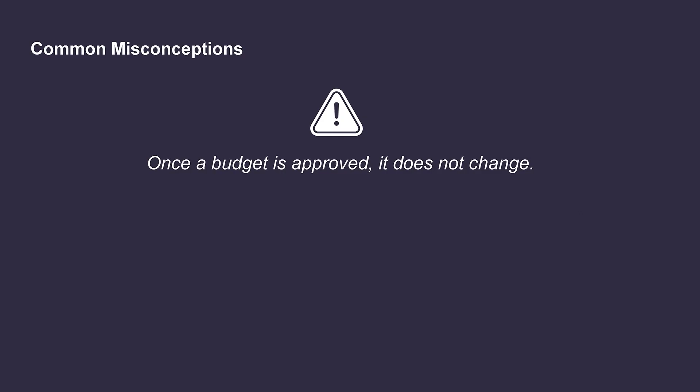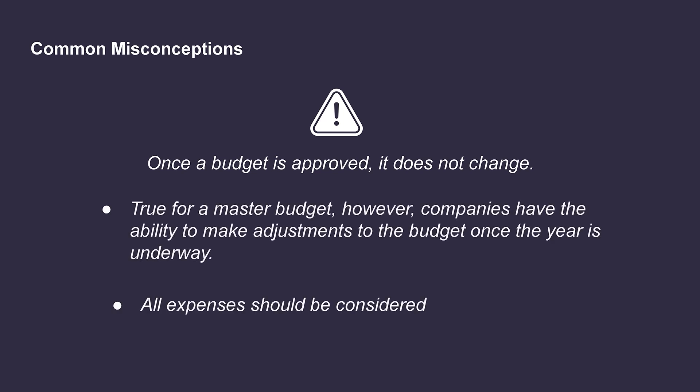Now, it's a common misconception that once the budget is approved, it's set in stone and doesn't change. While this is true of the original master budget, which is also sometimes called a static budget, companies have the ability to make adjustments once the year is underway. These adjustments are typically made to account for changes that have taken place in the business or economy following the completion of the budget. Regardless of whether a static or flexible budget is used, since operating budgets include so many inputs, it's a common mistake for certain costs to be missed during the preparation process. This can result in significant errors that flow through to other related budgets and can cause major operational issues if not addressed. As a result, it's important to ensure that all expenses are included during this phase.